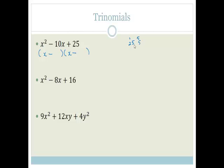1 and 25 is 24, and 25 plus 1 is 26, so that's not going to work. So, let's look at 5, and it obviously has to be 5 and 5. So, it's going to be x minus 5 and x minus 5. And that's it. That is your first trinomial factorized.